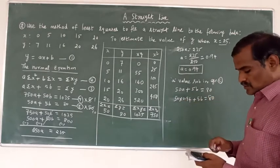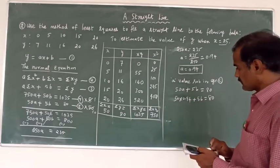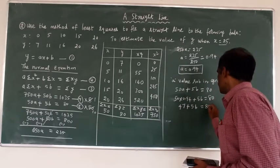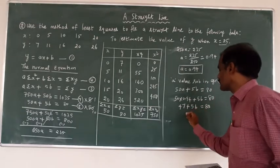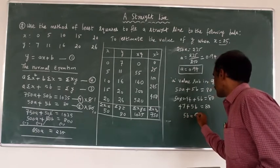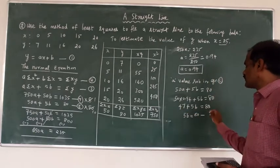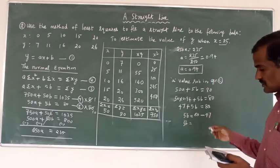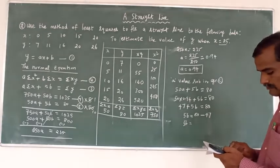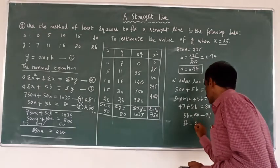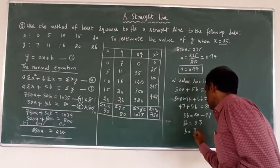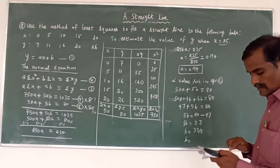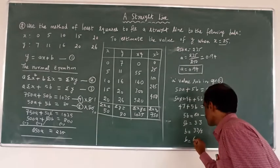Now finding a: a equals 235 divided by 250, which gives a equal to 0.94. Substituting a into equation 5: 50 times 0.94 plus 5b equals 80, giving 47 plus 5b equals 80. So 5b equals 80 minus 47, which is 33. Therefore b equals 33 divided by 5, giving b equal to 6.6.